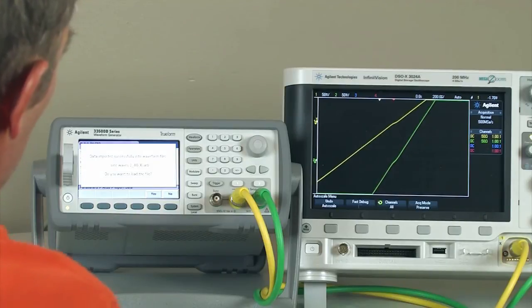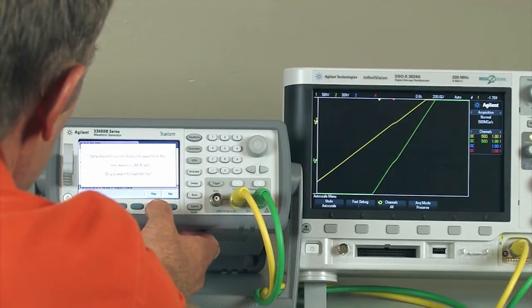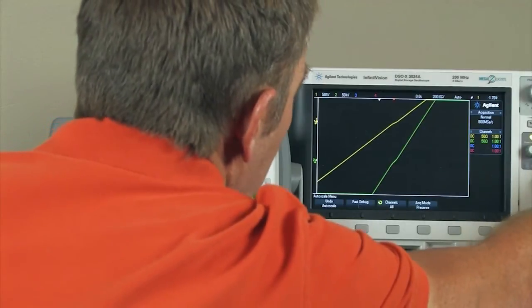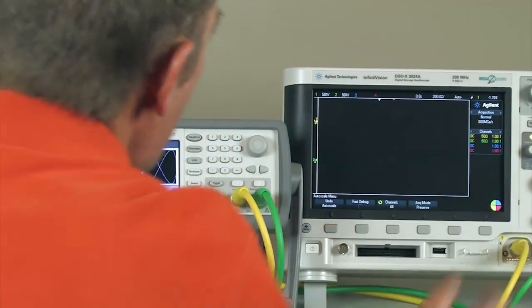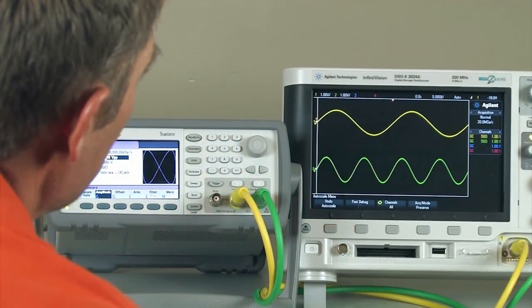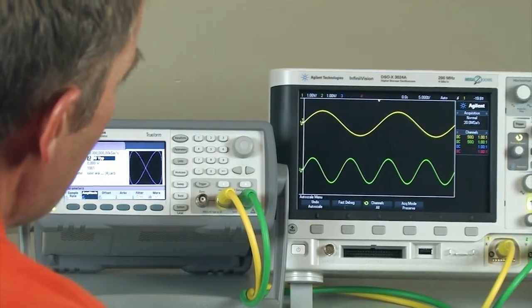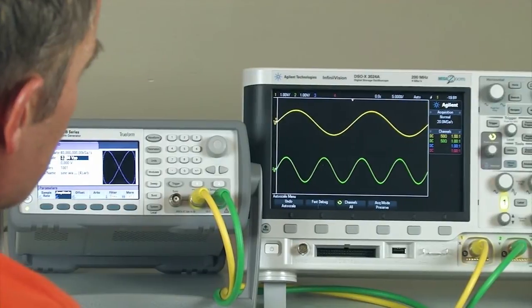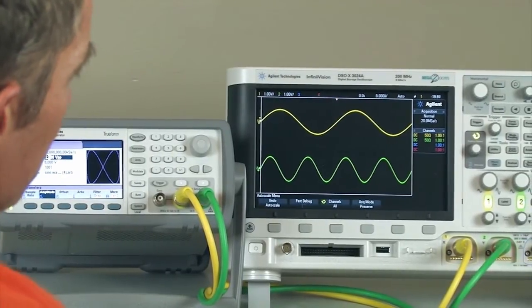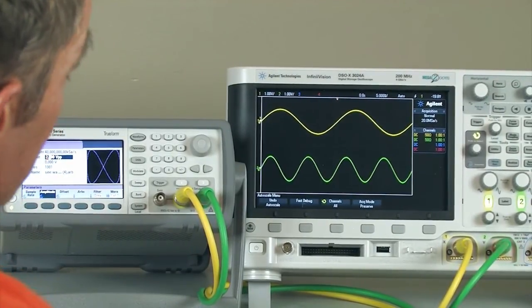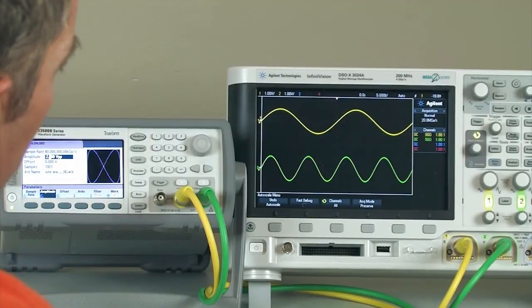And I'm going to import my data. Okay, so now we've imported our data. I'm going to say yes, we want to load the file. And I'm going to autoscale the oscilloscope so you can see both waveforms. As you can see, I have a sine wave on channel 1, and I have a sine wave at twice the frequency on channel 2. This could be used to represent a mechanical system with a gear ratio of 2 to 1.